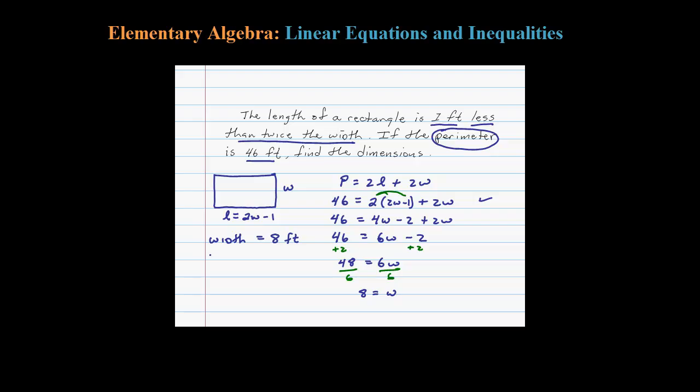Then the length is equal to 2 times W, which is 8. 2 times 8 is 16, minus 1 is 15 feet. So we took our W and we back-substituted in this formula here for the length.